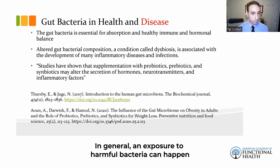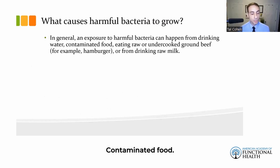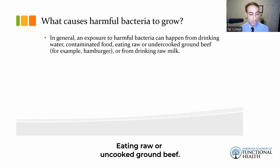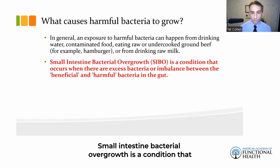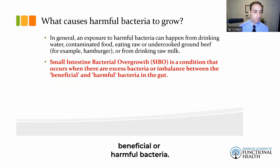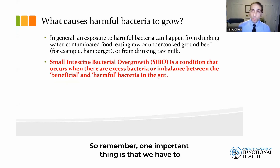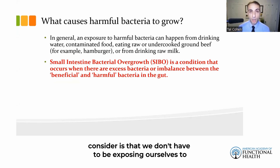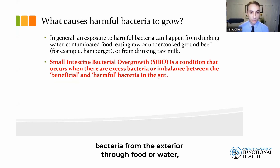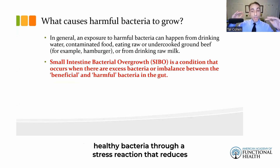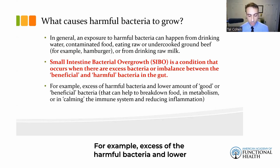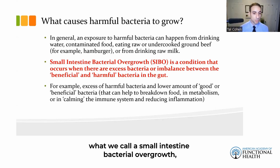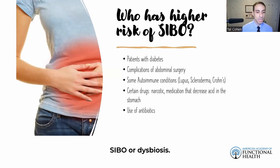Exposure to harmful bacteria can happen from drinking water, contaminated food, eating raw or undercooked ground beef, or drinking raw milk. Small intestine bacterial overgrowth (SIBO) is a condition involving excess bacteria or imbalance between beneficial and harmful bacteria. We don't have to be exposed to external contamination — we can also reduce healthy bacteria through a stress reaction that reduces immune function, or through consumption of sugar, which nourishes harmful bacteria. Excess harmful bacteria and reduced good bacteria lead to SIBO or dysbiosis.